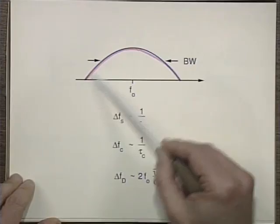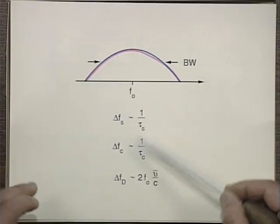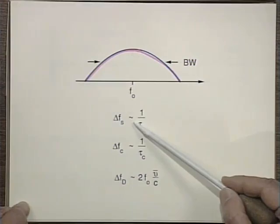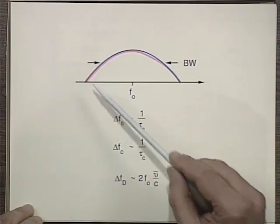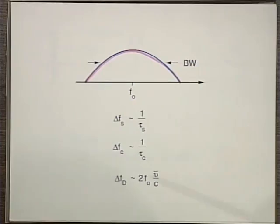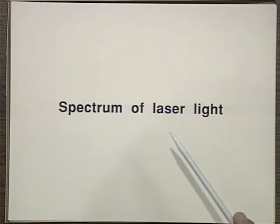To summarize, the width of the laser amplifier is made up of all sorts of things, and it depends on which is dominant — whether collision, Doppler, or spontaneous emission lifetime. In any case, we'll have a certain width, and this width determines the spectrum of laser light.